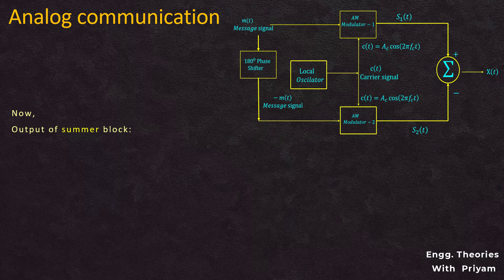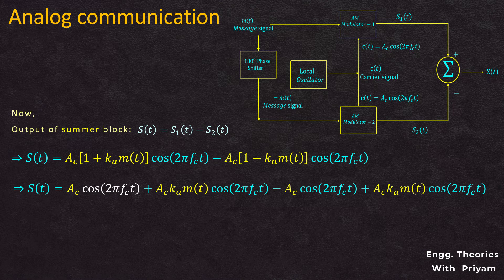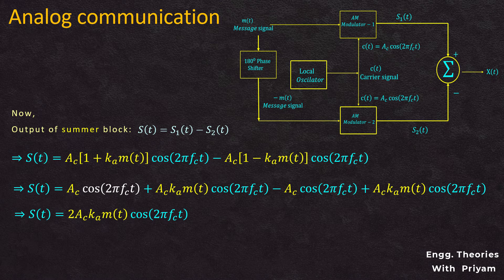These two modulator signals are given as inputs to the summer, and the output of the summer block is s(t) = s1(t) − s2(t). Substituting the values from Equation 1 and Equation 2: s(t) = Ac·[1 + ka·m(t)]·cos(2π·fc·t) − Ac·[1 − ka·m(t)]·cos(2π·fc·t). Expanding the terms: s(t) = Ac·cos(2π·fc·t) + Ac·ka·m(t)·cos(2π·fc·t) − Ac·cos(2π·fc·t) + Ac·ka·m(t)·cos(2π·fc·t).